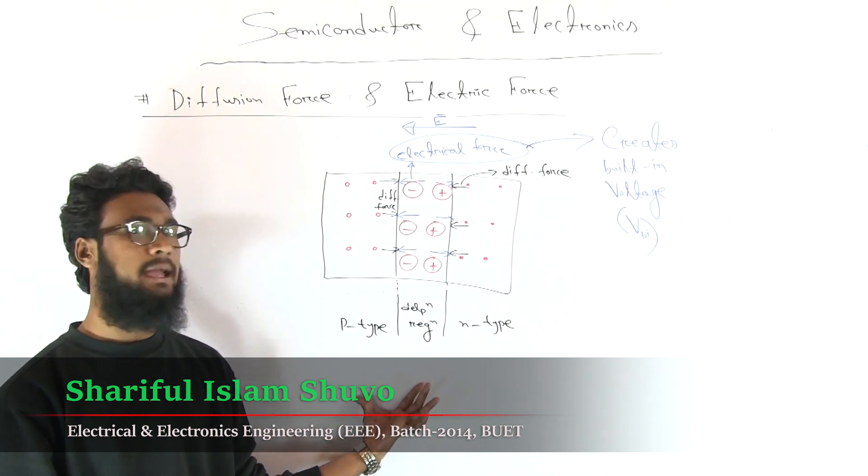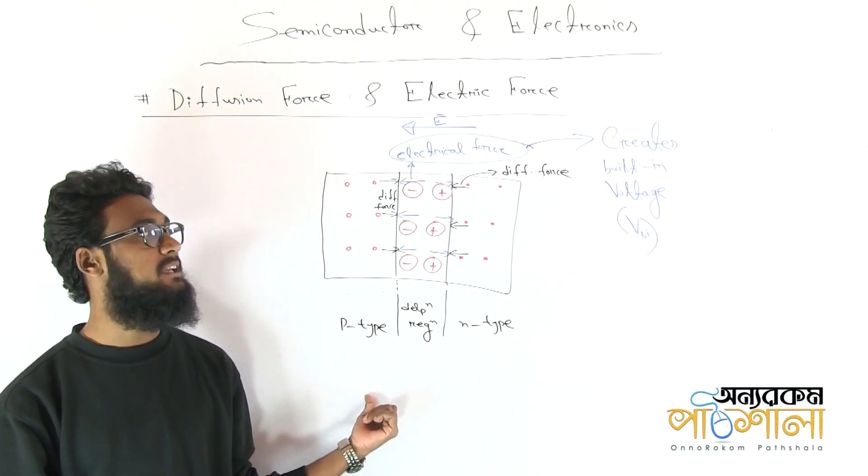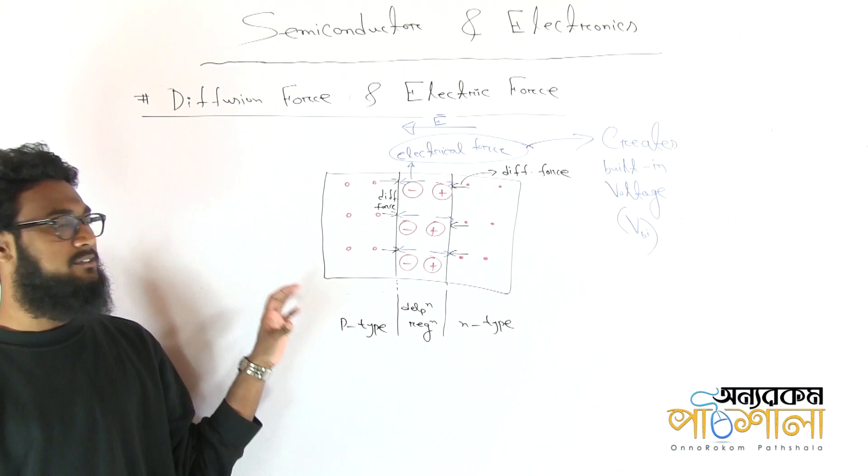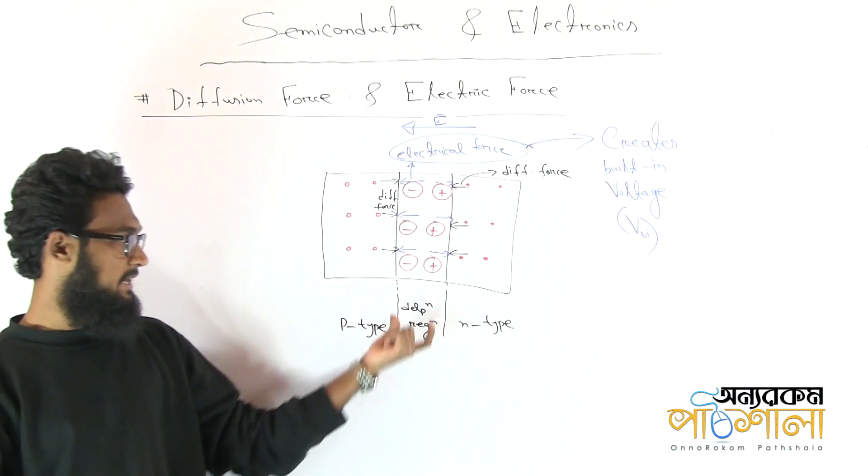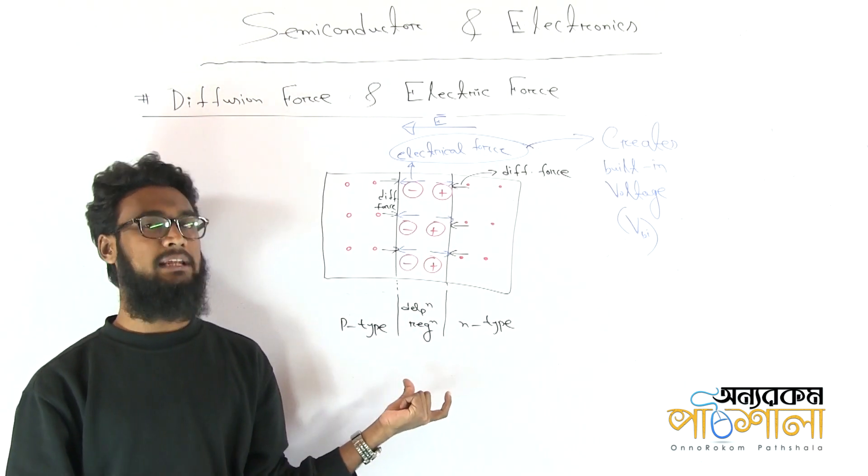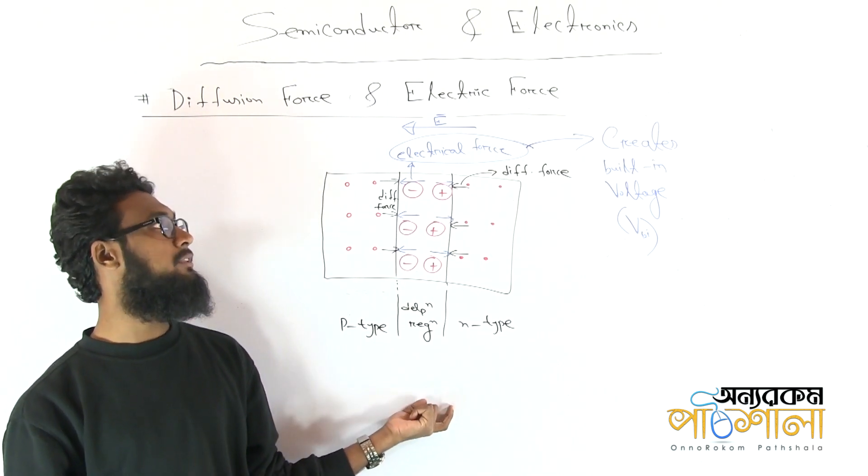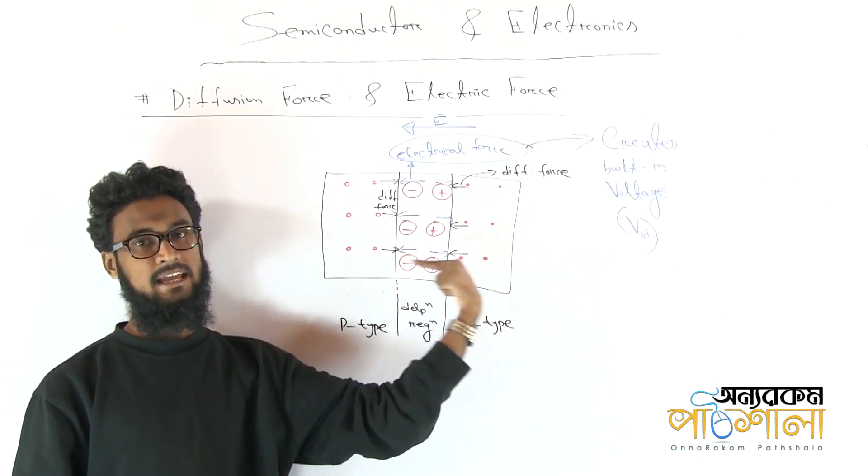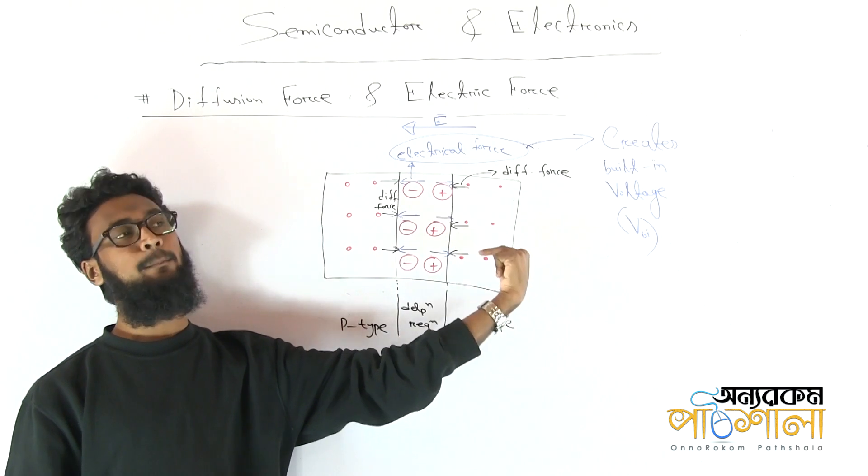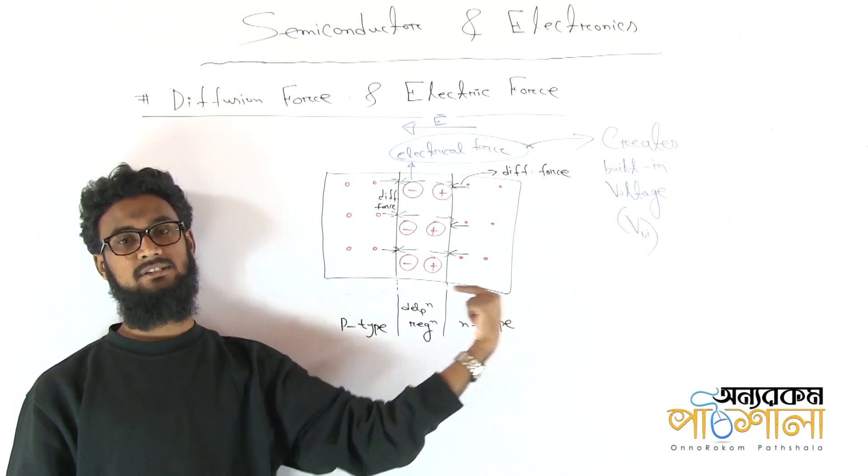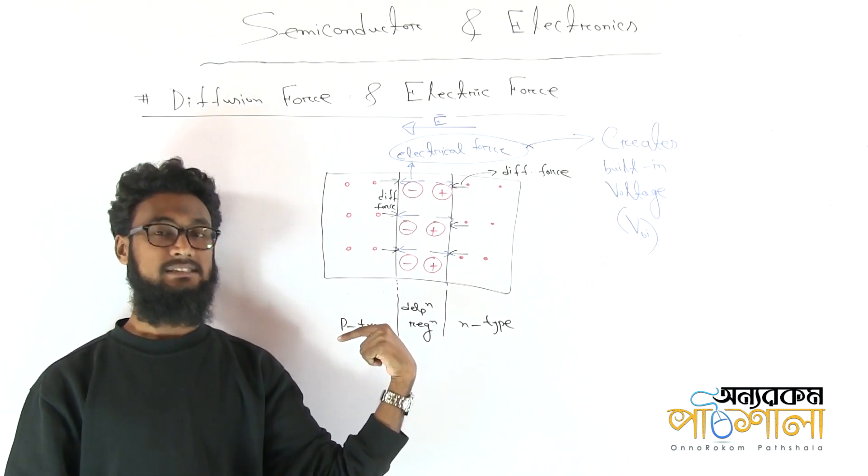we have to look at this approach. We have to look at the diffusion force and electrical force. In this diffusion region, the electric field exists. We can see how the electric field exists in this direction. We have to look at the plus charge and minus charge. This is the electric field.